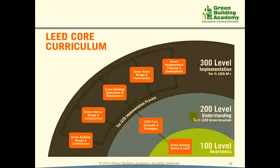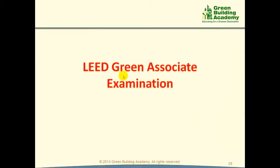The LEED curriculum is divided into three levels of knowledge: 100 refers to Awareness, 200 refers to Understanding, and 300 refers to Implementation. After completing the first two chapters of this course, you will have a basic awareness of green buildings and LEED — knowledge level 100. After completing this course and passing the LEED Green Associate examination, you will have an understanding of concepts and strategies — knowledge level 200. After passing the LEED AP Specialty examination, you will be able to implement concepts in a project — knowledge level 300. To be recognized in the construction market, you should target becoming a LEED AP.